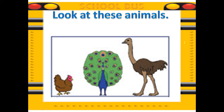KGs, I need your attention, please. This arrow is pointing to the ostrich. From the size of the ostrich, we can say among these three, the ostrich is the tallest. And what could be the opposite of the tallest? If there is the tallest, we also have the...